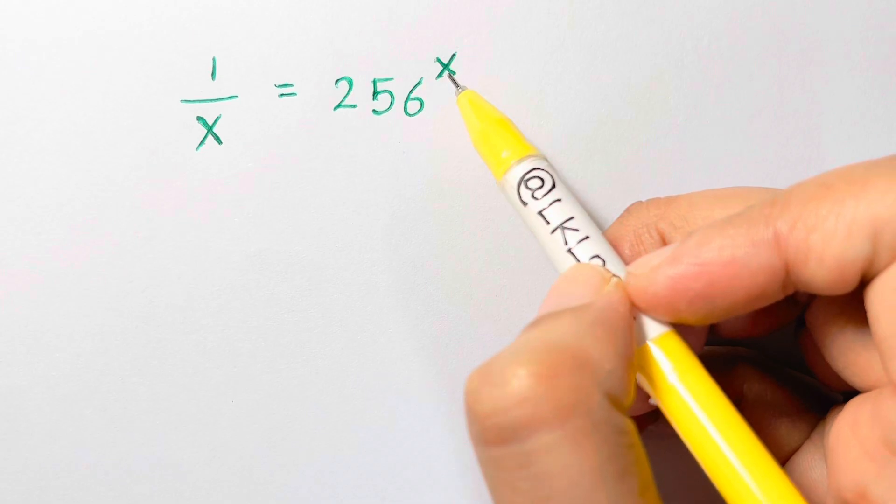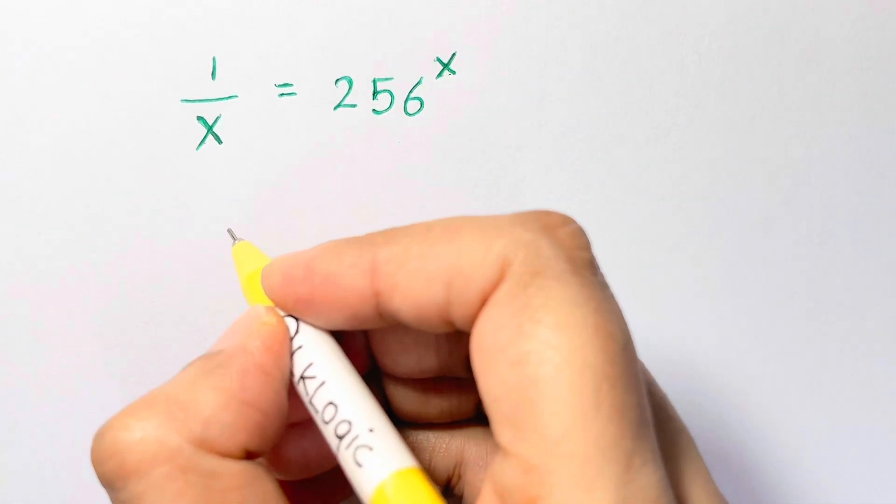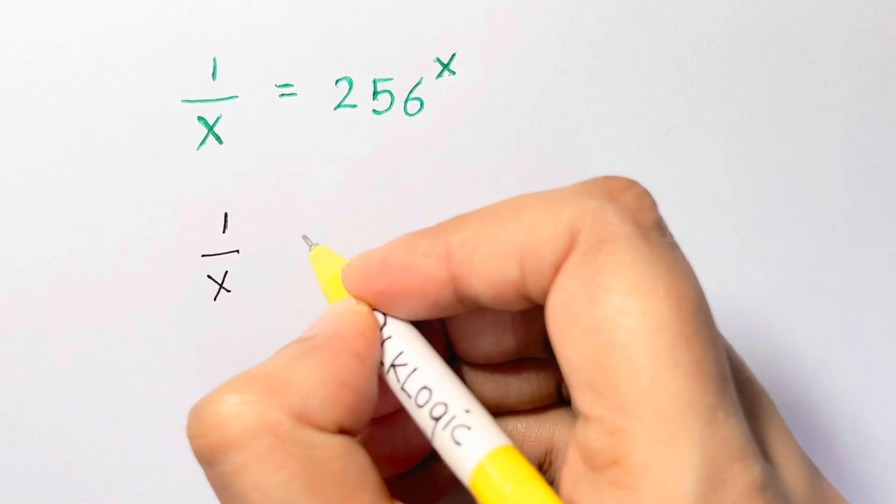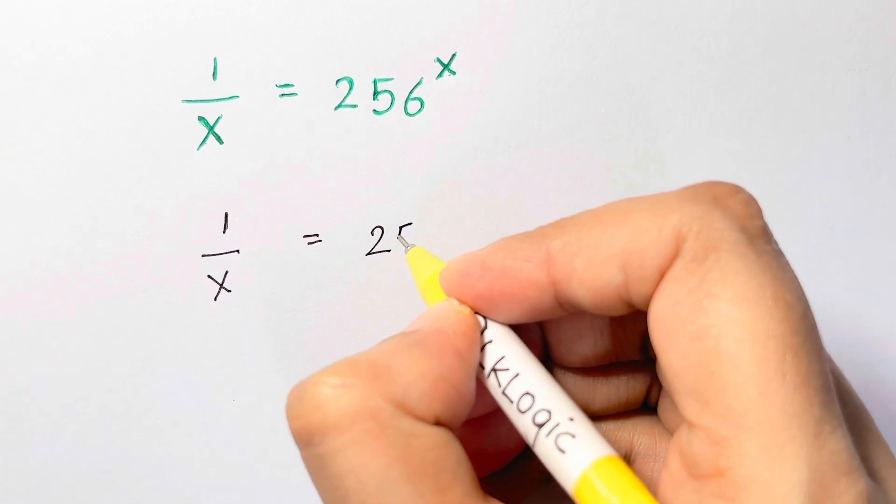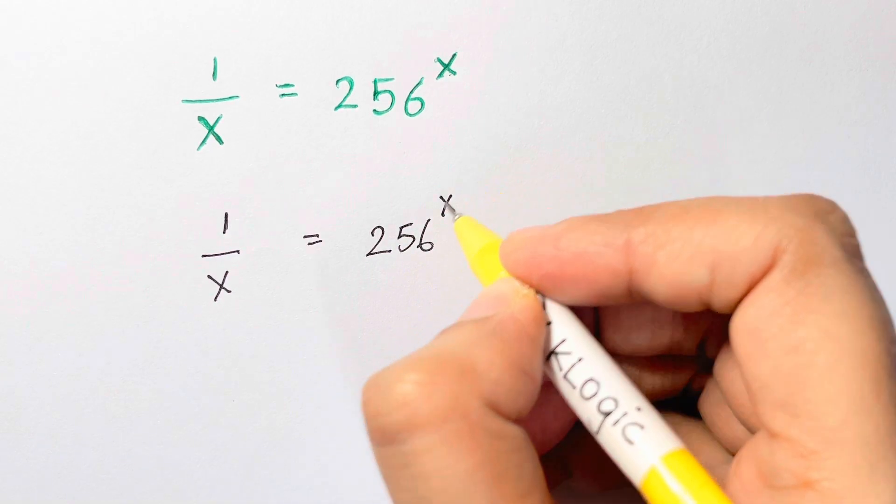So let me write it down: 1 over x is equal to 256 to the power of x. To eliminate this x, we're going to take 1 over x.